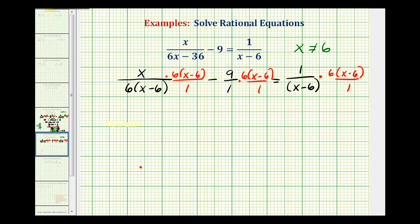Now that we've listed the excluded values, we'll go ahead and simplify and find each of these products. Looking at this first product, notice how we have six over six, that simplifies to one. We also have a factor of x minus six over a factor of x minus six. Notice our denominator is now equal to one and our numerator is just x.